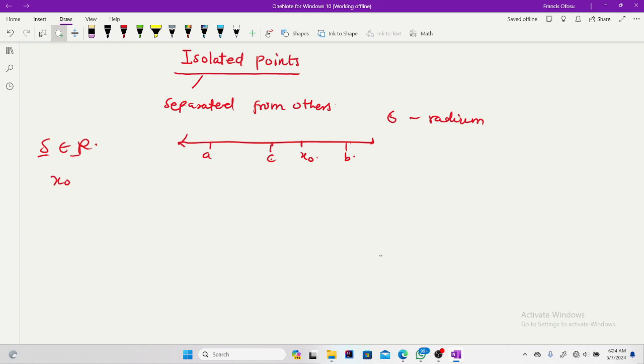So this point X naught here is a member of S, so that when I take any interval around X naught here, I wouldn't get the other members showing up within its interval. And it should be as small interval as possible.